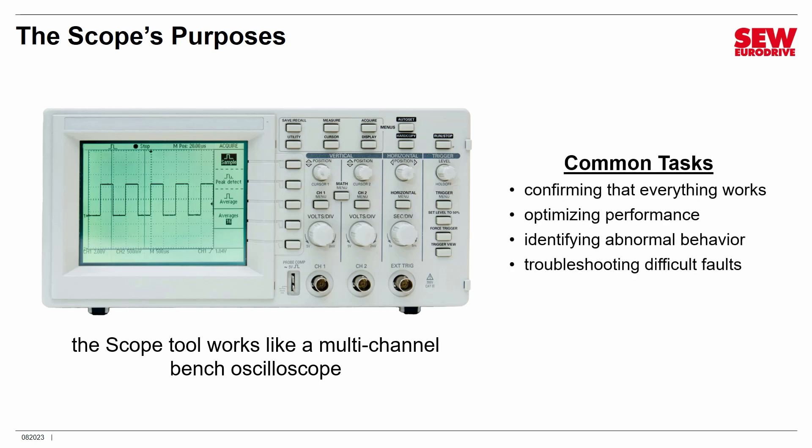The scope has four major purposes. First, it's often used just to confirm that your VFD is performing correctly — that it's ramping up and down in the right amounts of time. You can also use it for optimizing performance; the scope gives you a great visual way of doing that. You can use it for diagnostics and troubleshooting to get a clearer picture of abnormal VFD behavior. And finally, the scope is very good at dealing with troublesome faults — you can set it to watch different VFD parameters, and when a fault occurs, you can look at the trace to understand what caused it. We'll explore several of these and demonstrate how to set them up.